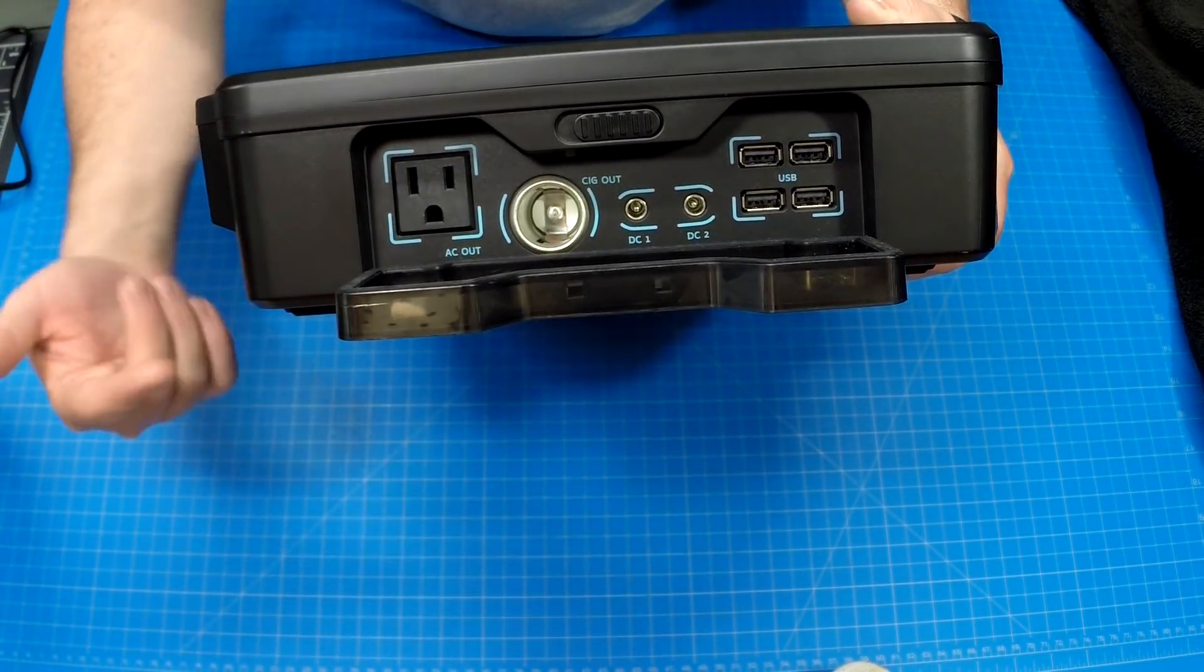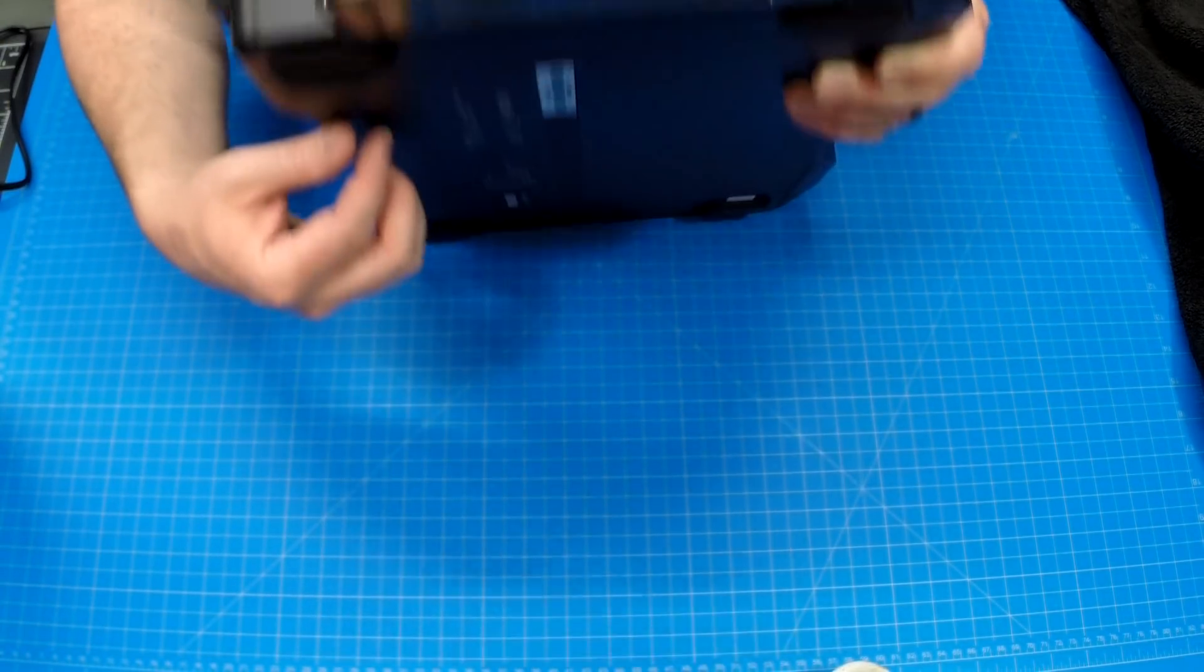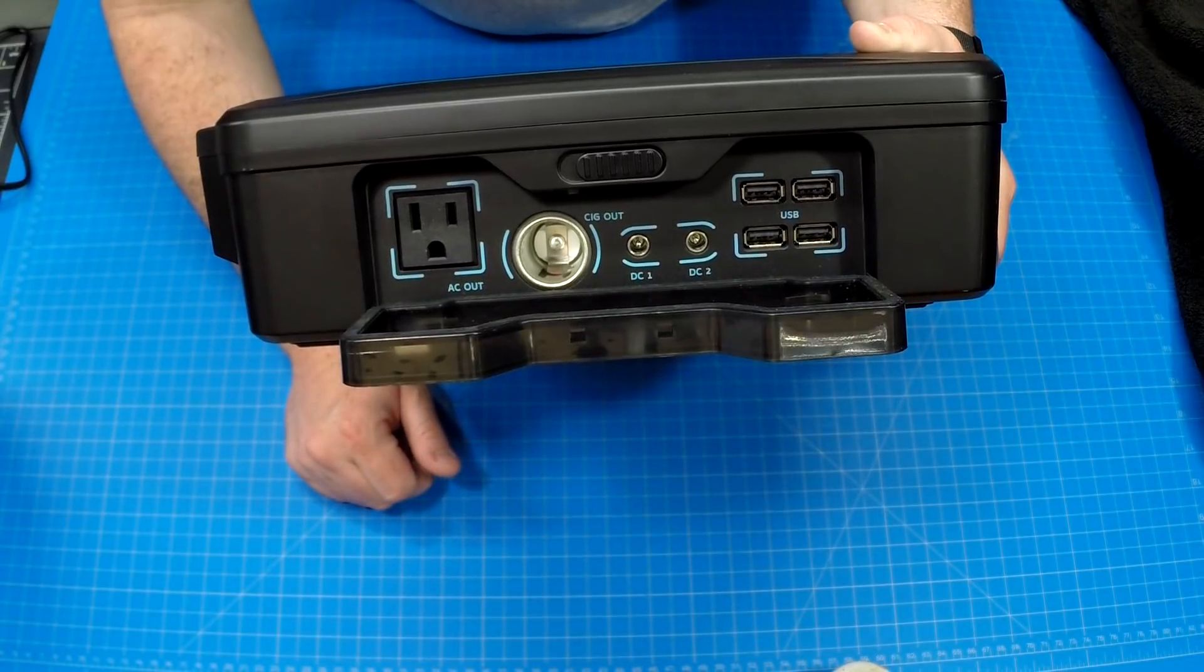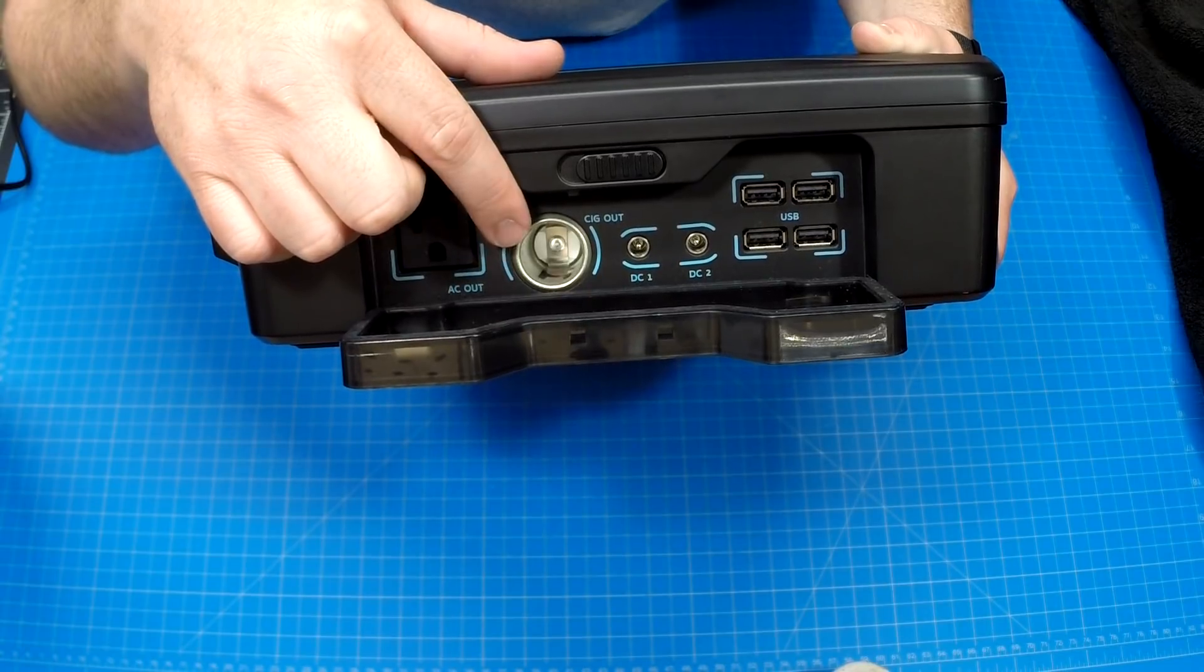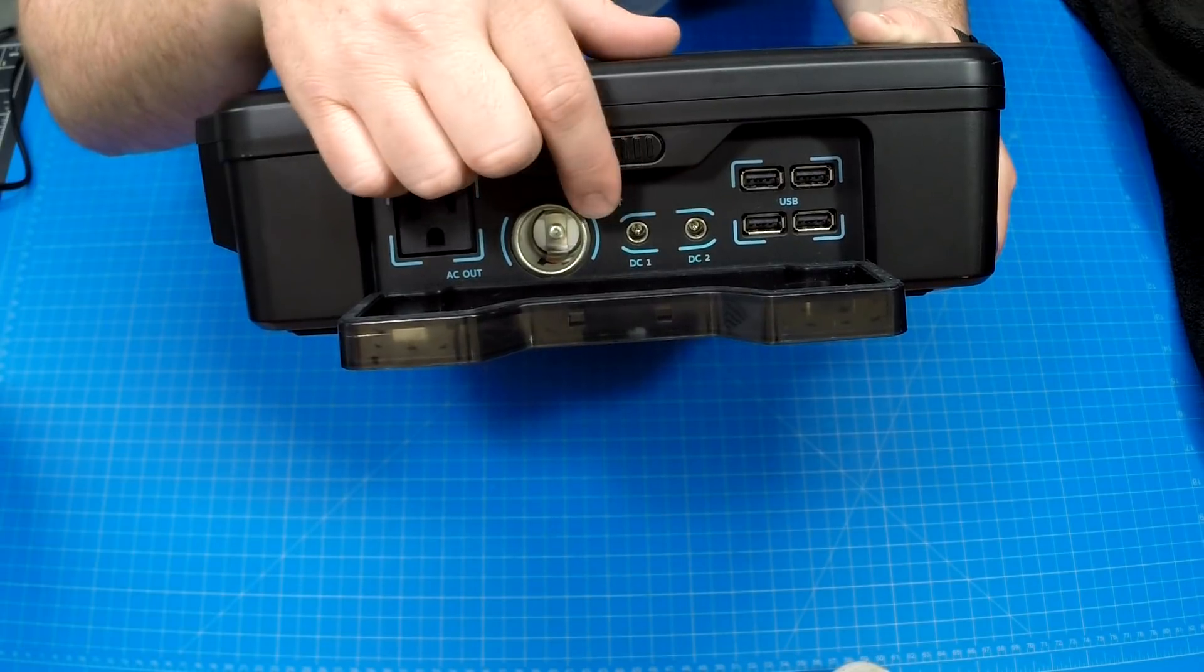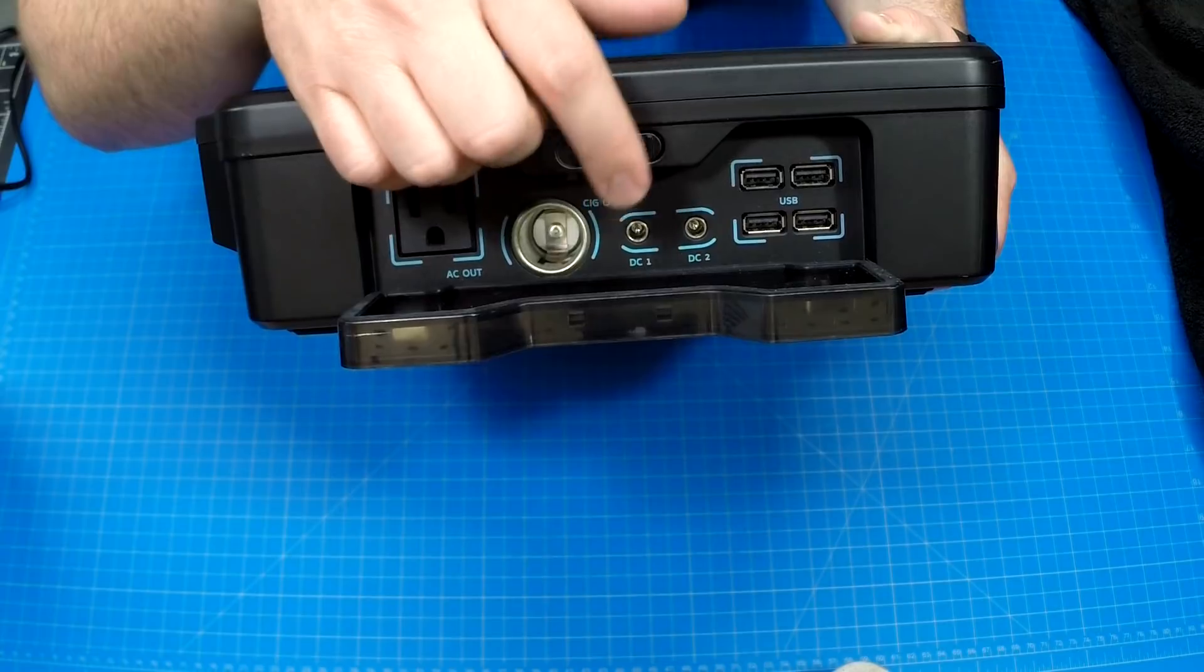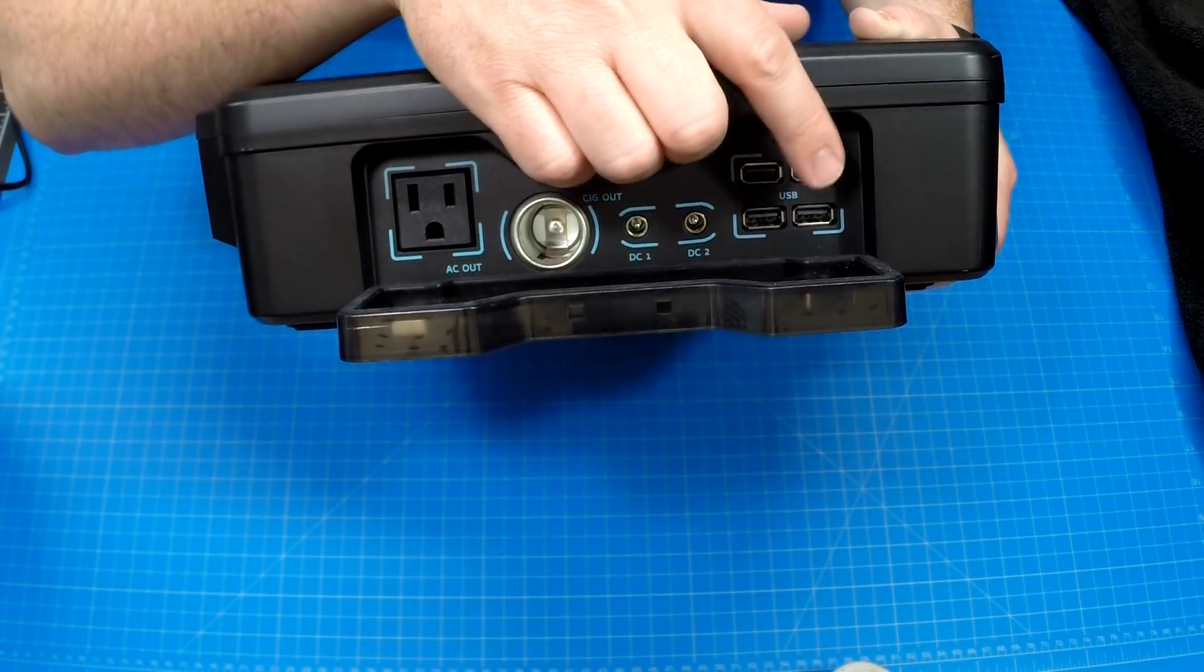That way I know when I'm out in the field using it, I can just reference the bottom of the unit instead of the manual because I lose manuals. The other thing is your 12 volt, your cigarette plug, 12 volt, 3 amps. Next ones are DC outs, so you got two DC outs, so it's like 5.5 millimeter, and your USBs.